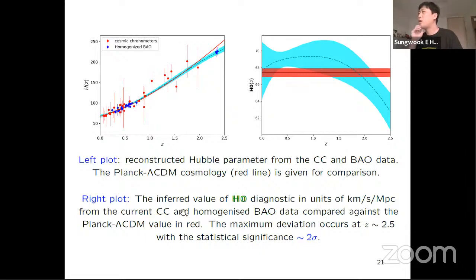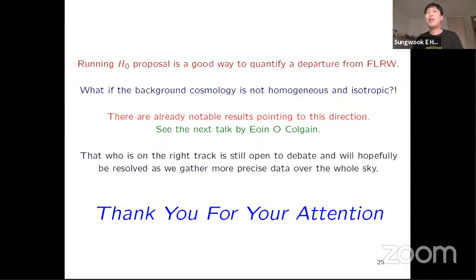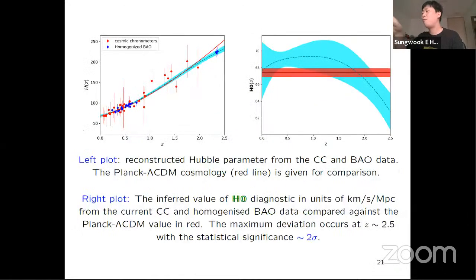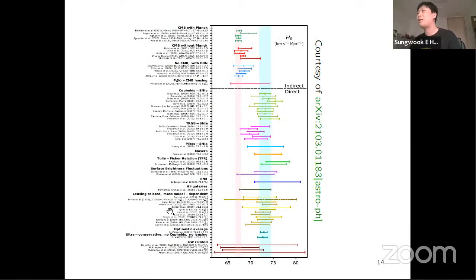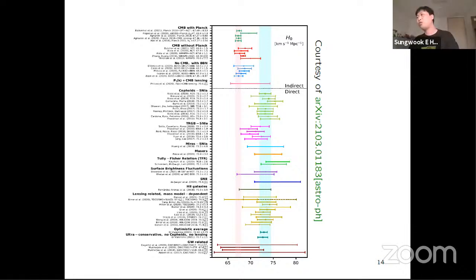I have one question. Whenever people talk about this kind of tension, it is the early universe versus late universe tension. One thing that worries me is there are a lot of late-time H_0 measurements, and most of them are above 72. But some observations are not — for example, going to TRGB observation, it seems like something in between CMB and supernovae. Do you want to add some comments on this?